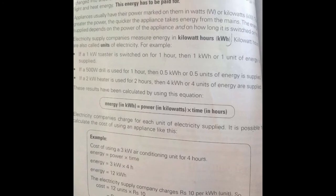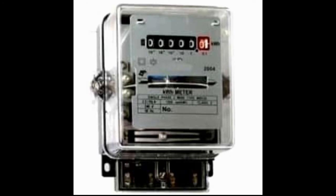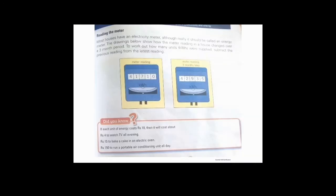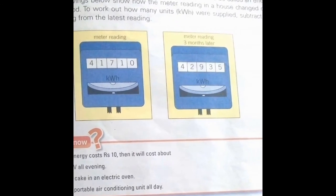Now you will see the electrical meter, which is used to calculate how much electricity is consumed in your house. You can see two readings on the meter diagram: a current reading and a previous reading. After three months, the reading changes.